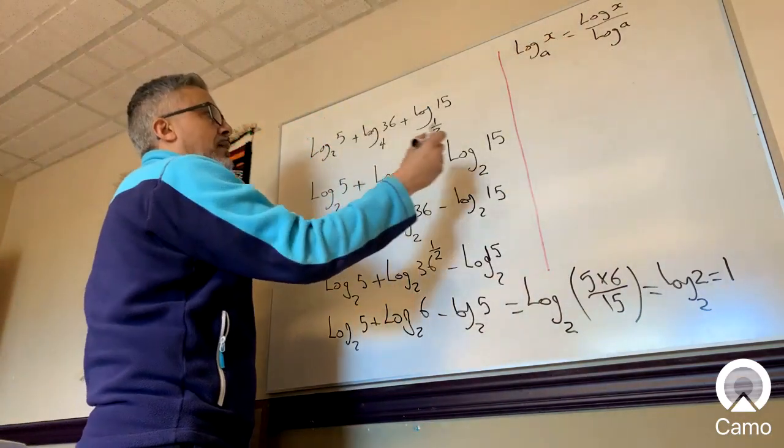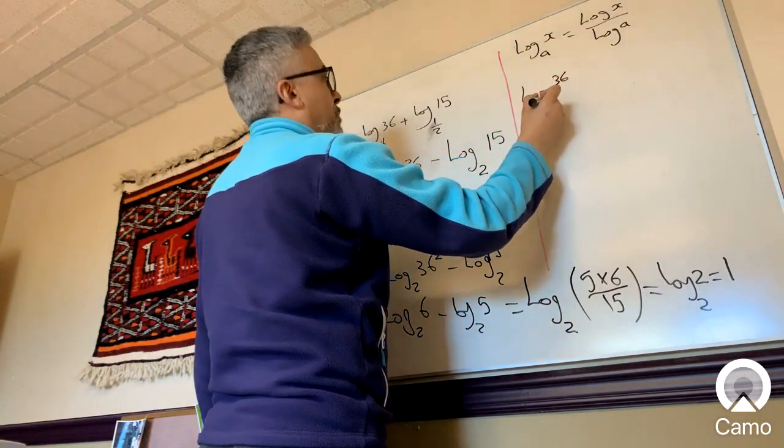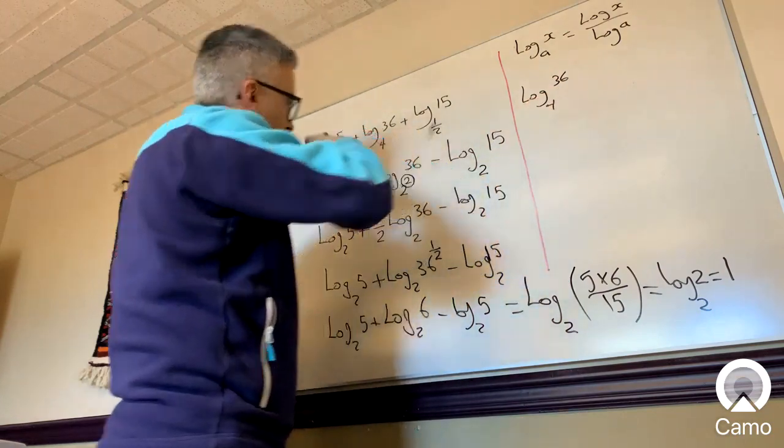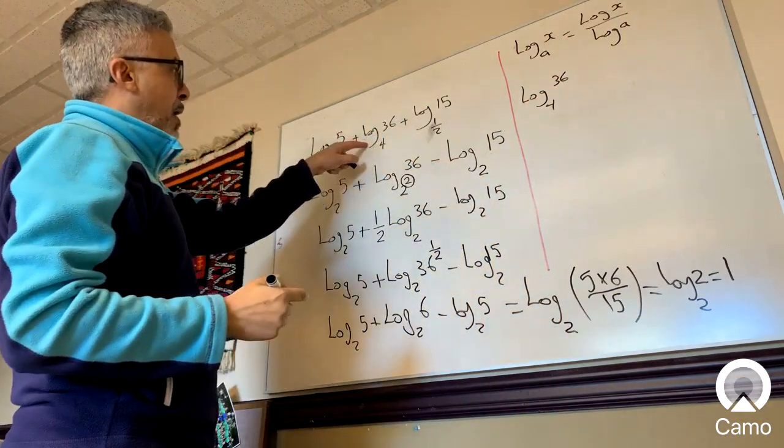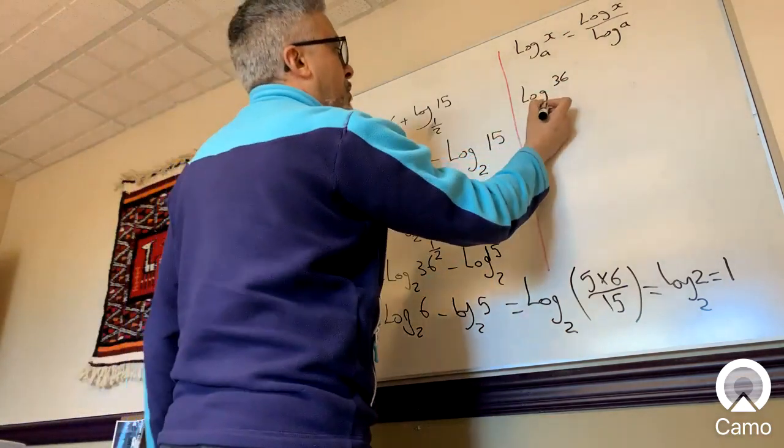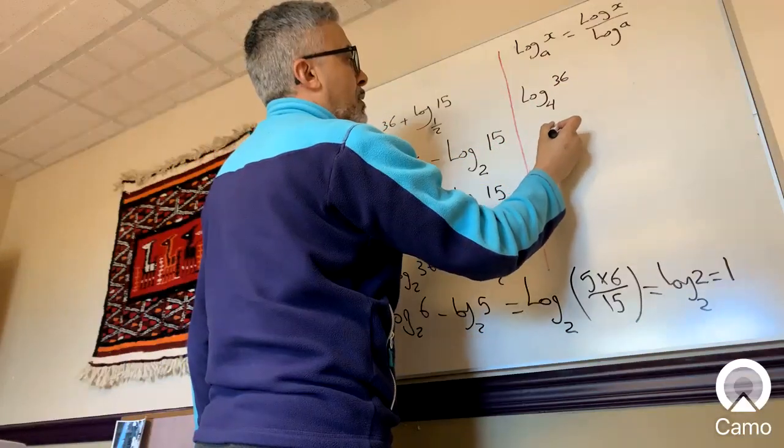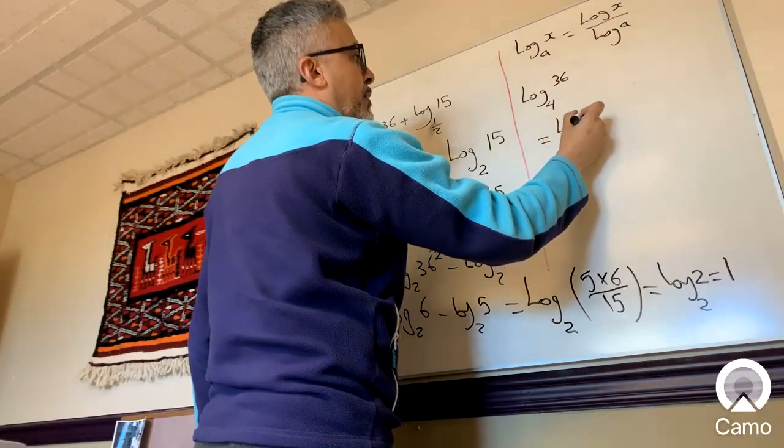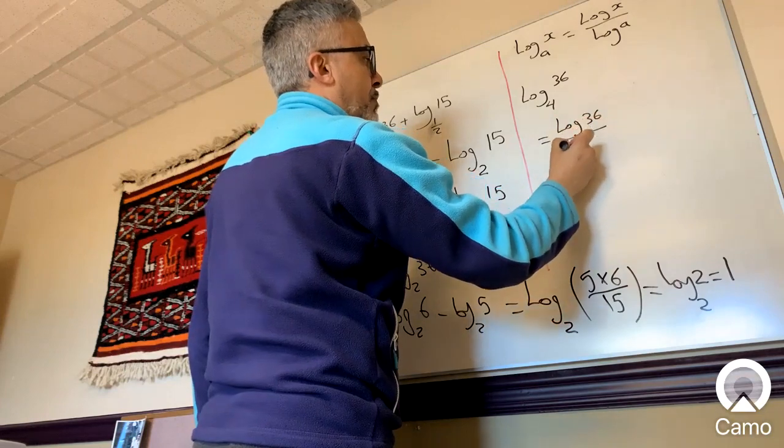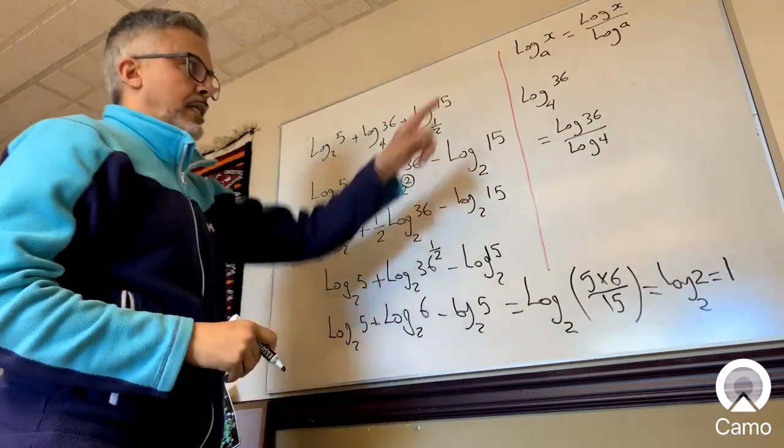So now let's take the log 36 base 4, or log base 4 of 36. How was I able to change it from here to that? So now let's just change that into log 36 over log 4. That's change of base.